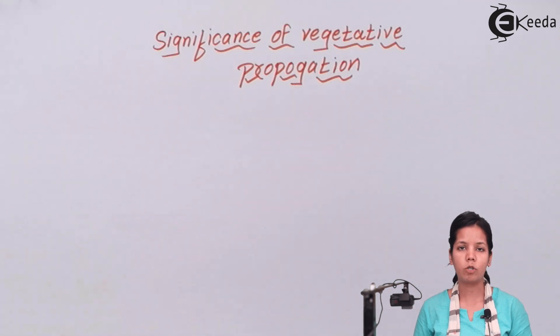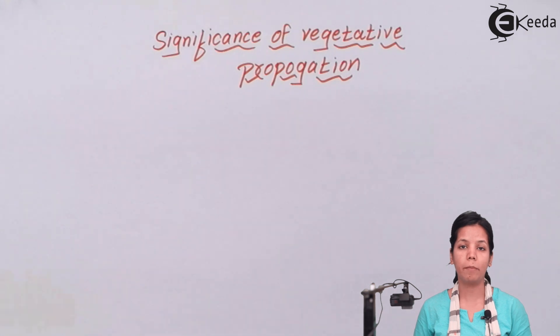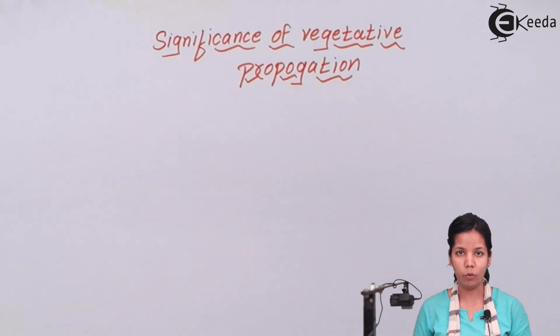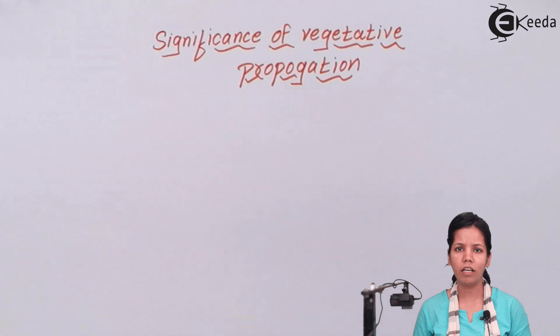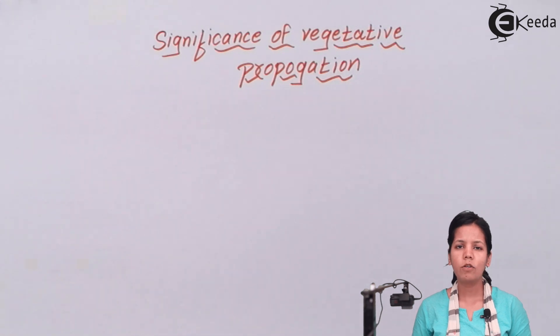Vegetative propagation is done in a variety of plants. For example, if you have cultivated a rose, you have done vegetative propagation — you have done grafting. So what are the importances of vegetative propagation?